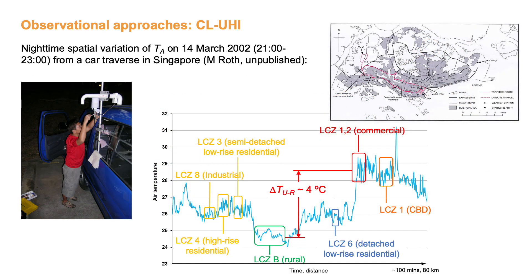The traverse approach is illustrated here. In this particular case, a temperature sensor is mounted on a vehicle and driven along a fixed traverse route to sample the variability across different neighborhoods, again classified according to their respective local climate zones. The temperature trace shows the large small-scale variability along the route. Significant temperature differences exist between the various neighborhoods, with the lowest temperature observed in the rural area with scattered trees, and the highest temperature found in the commercial city center. The heat island intensity during this particular traverse was about 4 degrees C. The traverse approach is not suitable to monitor long-term heat island dynamics across an entire city, but given its high spatial resolution, it can be used to support selection of long-term monitoring sites.